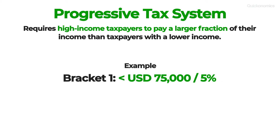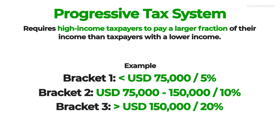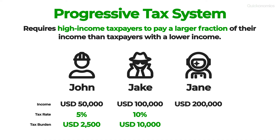People who earn up to $75,000 pay a 5% income tax. People who earn between $75,000 and $150,000 pay 10%. And people who make more than $150,000 pay a 20% income tax. That places John, Jake, and Jane in three different brackets. John only has to pay a 5% income tax, which adds up to $2,500 in his case. Meanwhile, Jake has to pay 10% of his income in taxes, which is equal to $10,000. And finally, Jane's income is taxed at 20%, which means she has to pay $40,000.